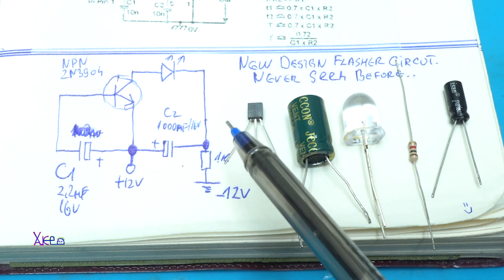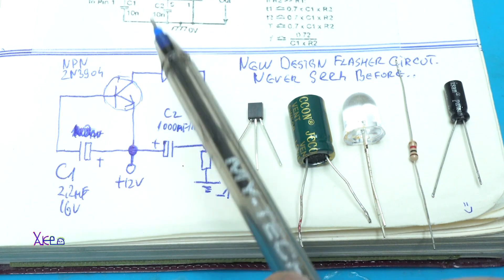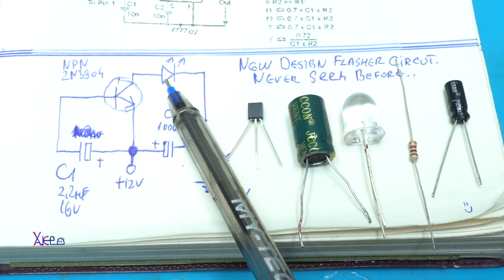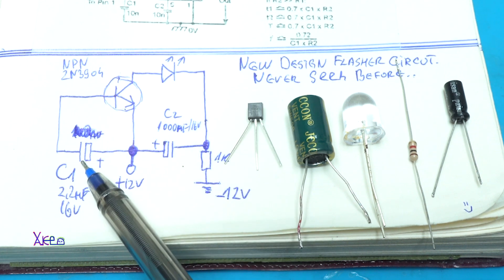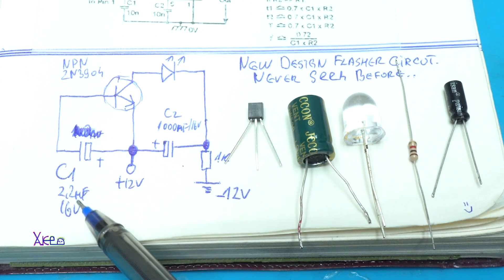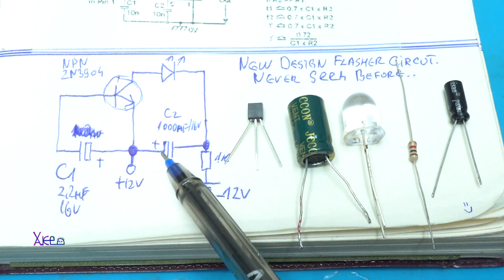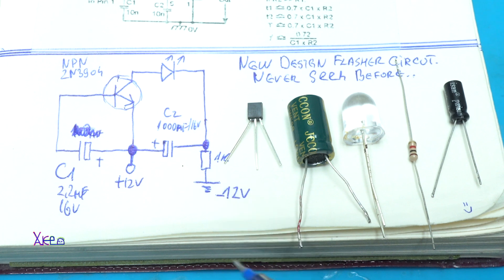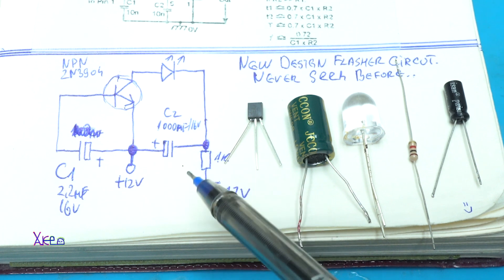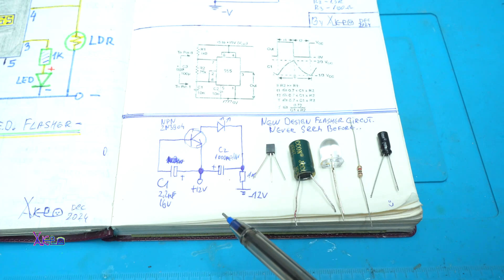Like this NPN transistor 2N3904, one white LED. In my circuit you can choose whatever color you want. There is one electrolytic capacitor of 2.2 microfarads at 16 volts and one big electrolytic capacitor 1000 microfarads 16 volts, and one kilohm resistor. Five electronic components to make this super simple new design flasher. Let's build it.